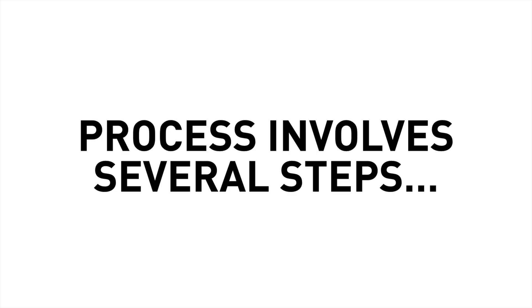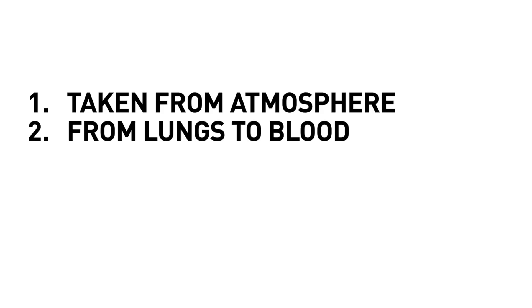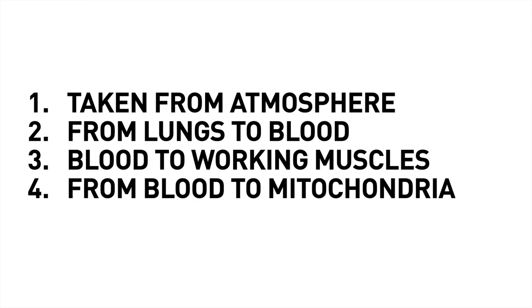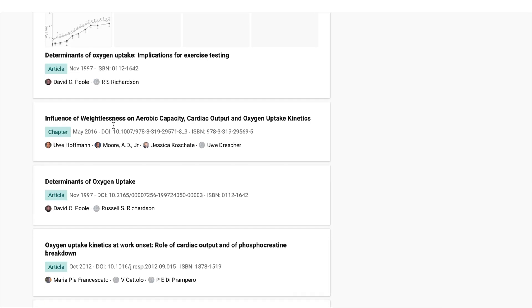Now the process of this oxygen actually reaching the muscles to be used for energy production involves several steps which include, in simple terms: it being taken in from the atmosphere and entering the lungs, the passage of oxygen from the lungs into the blood, that blood being pumped by the heart to the working muscles, and then the oxygen being transported from the blood to the mitochondria — the little power-producing organelles within the muscle cells — via the capillaries.